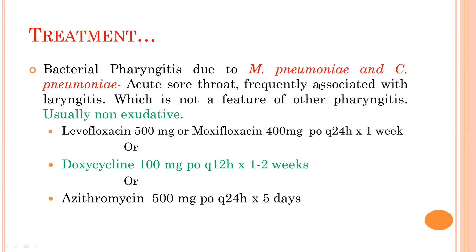Bacterial pharyngitis due to Mycoplasma pneumoniae and Chlamydophila pneumoniae is usually non-exudative and acute sore throat frequently associated with laryngitis, which is not a feature of other pharyngitis types. Treatment: respiratory fluoroquinolone — levofloxacin 500mg or moxifloxacin 400mg once daily for 1 week; or doxycycline 100mg 12-hourly for 1–2 weeks; or azithromycin 500mg once daily for 5 days.